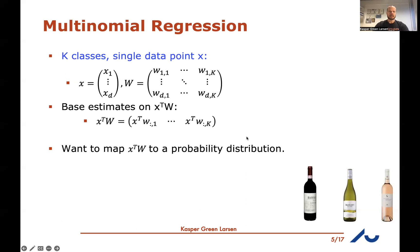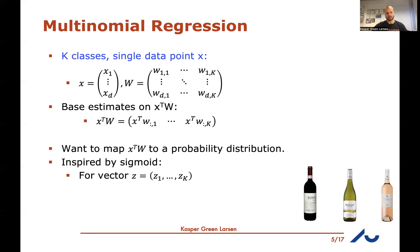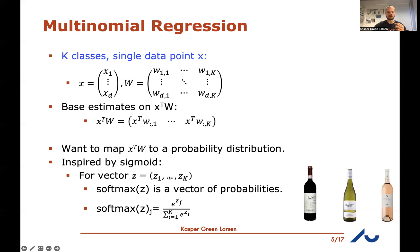We then map this vector of scores into a probability distribution using the softmax function, inspired by the sigmoid. Given an arbitrary real-valued vector z, the j-th entry of softmax(z) is e^{z_j} divided by the sum of e^{z_i} over all coordinates i. The denominator ensures the outputs sum to one, and they're always non-negative since the exponential is non-negative.